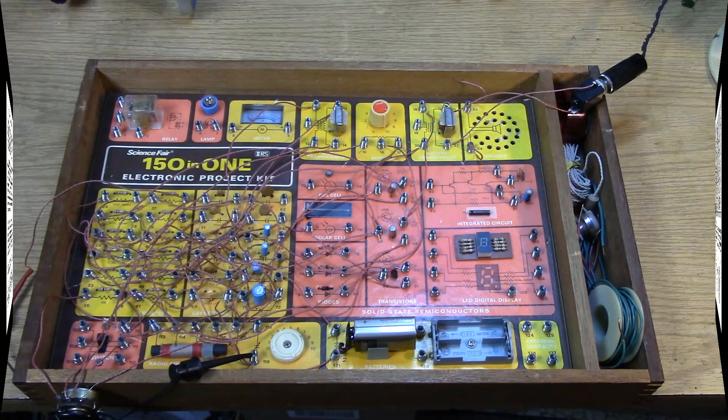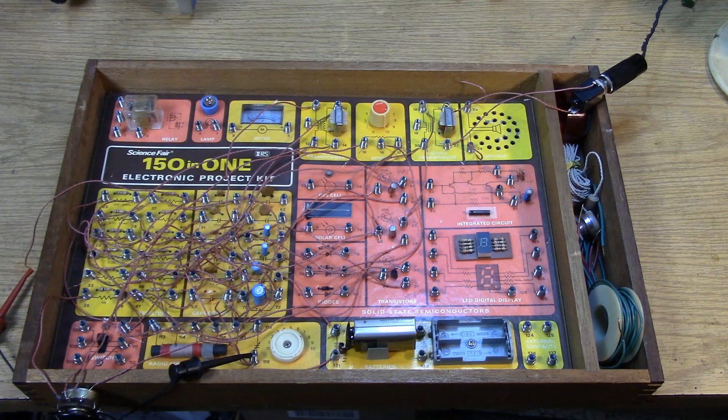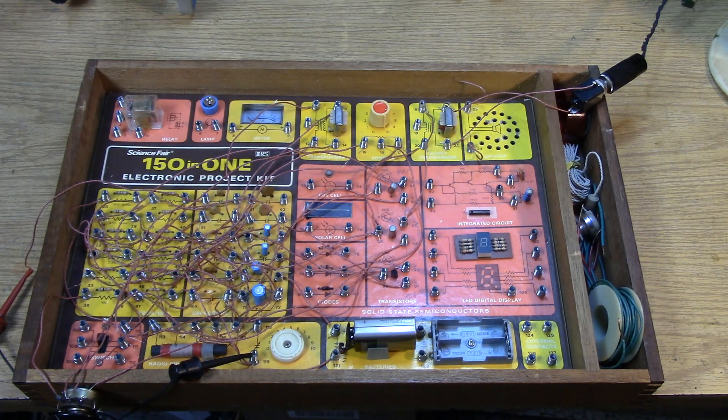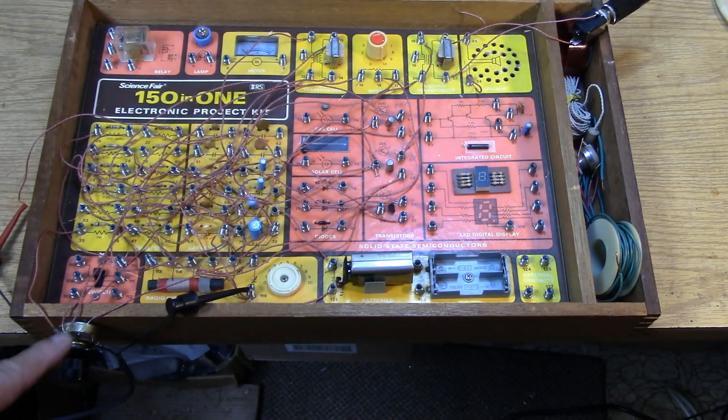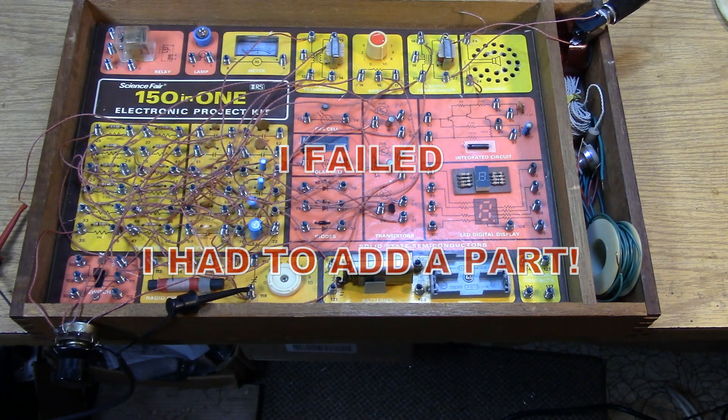So this is my attempt at the regen. I've rearranged the parts. And I've used a 50K pot down here. This is a 50K pot I've added. This adjusts the voltage on the detector.